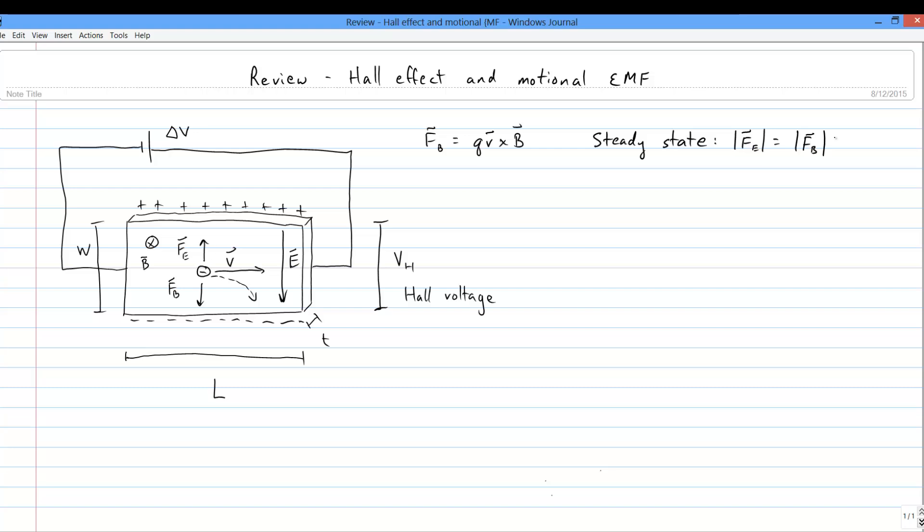We'll reach a steady state situation when enough charges pile up that the electric force balances out the magnetic force. Which is to say, when the magnitude of QE equals the magnitude of QV cross B. If the V and B are perpendicular, this is just QE equals QVB. Or E equals VB, where V is the speed at which the charges move across the conductor, which we call the drift speed.